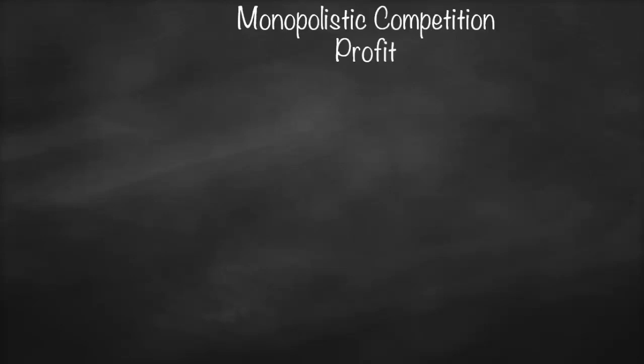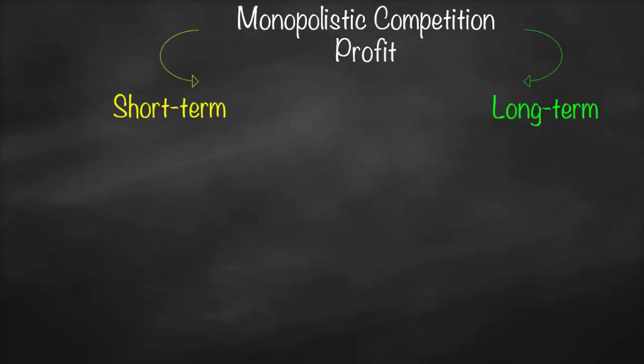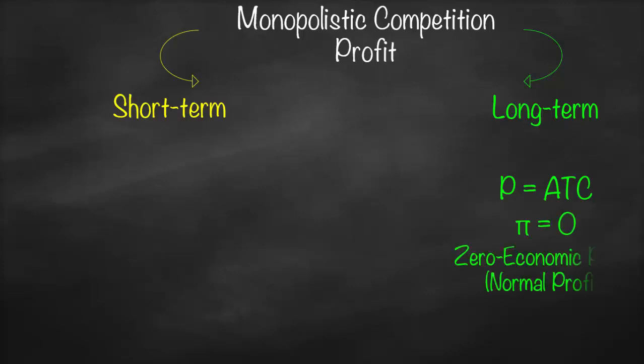Monopolistic competition is the same as perfect competition in terms of short-run and long-run profit. In the long run, we know that price is equal to average total cost, which means profit is equal to zero. Therefore we call it zero economic profit, or normal profit, which means in the long run all firms in monopolistic competition and perfect competition must have zero economic profit.